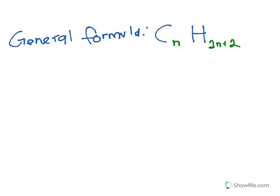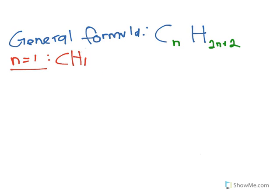The general formula of alkanes is CnH2n+2. Let's put the formula into action. If I want carbon to be 1, n equals 1. C1, H(2×1+2) = H4. If your carbon is 1, you don't need to write 1 — just CH4. To draw this: 1 carbon and 4 hydrogens surrounding that carbon.